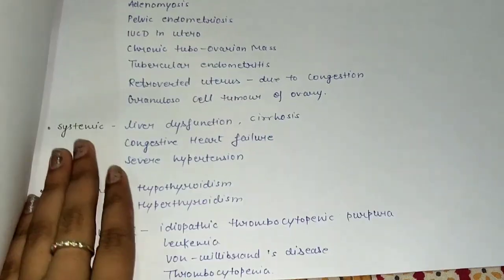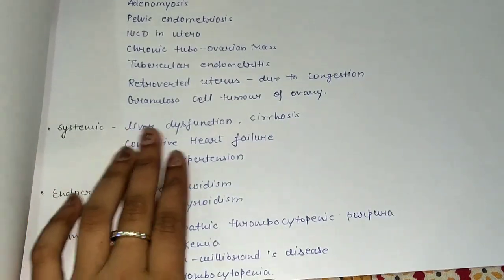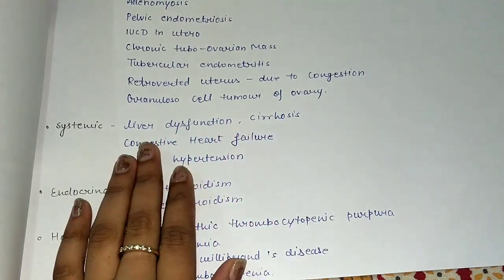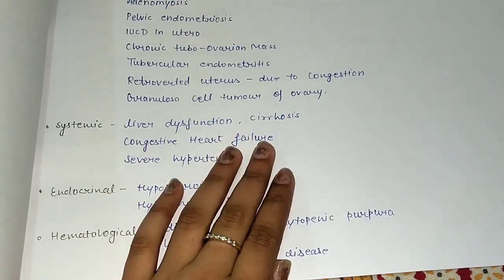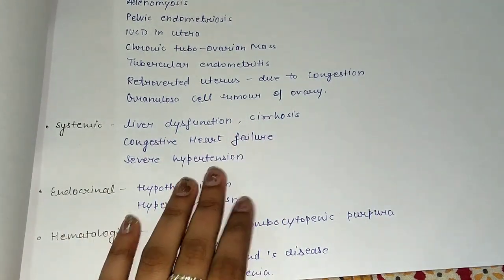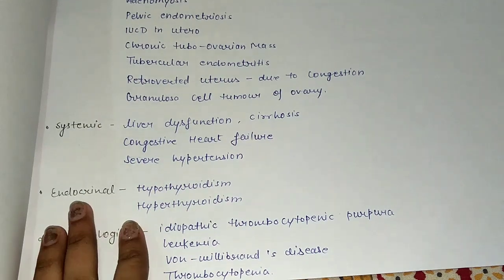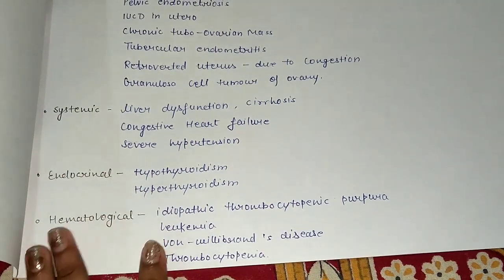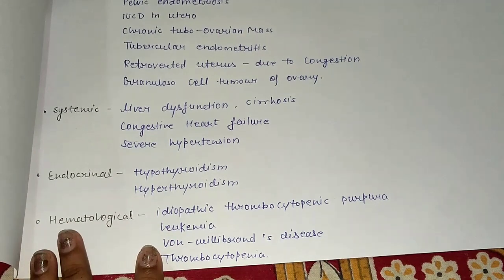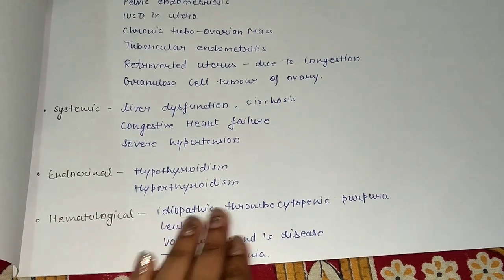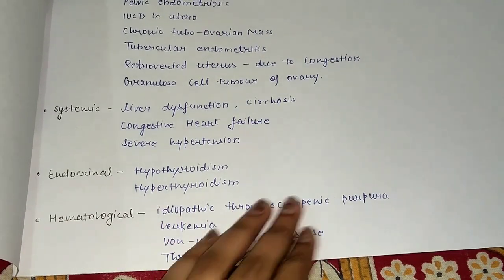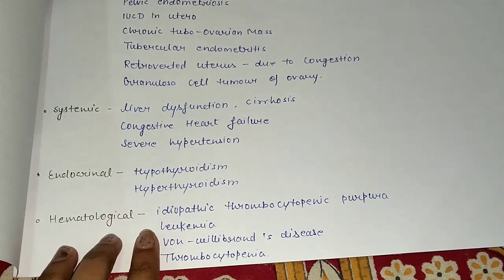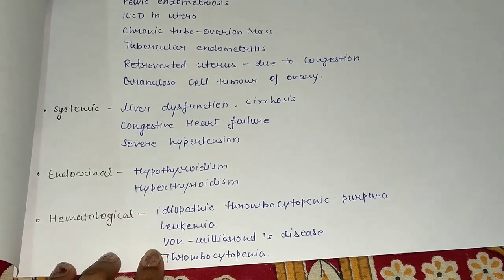Systemic causes include liver dysfunction such as cirrhosis, congestive heart failure, and severe hypertension. Endocrine causes include hypothyroidism and hyperthyroidism. Hematological causes include idiopathic thrombocytopenic purpura, leukemia, and thrombocytopenia.